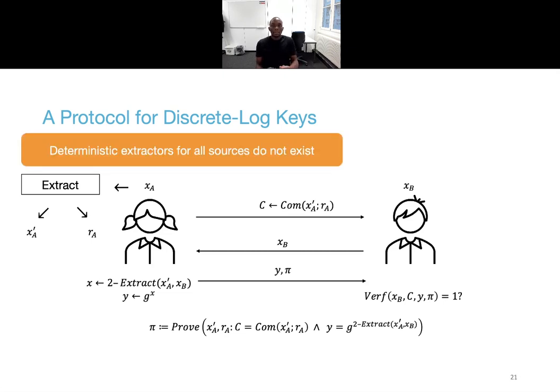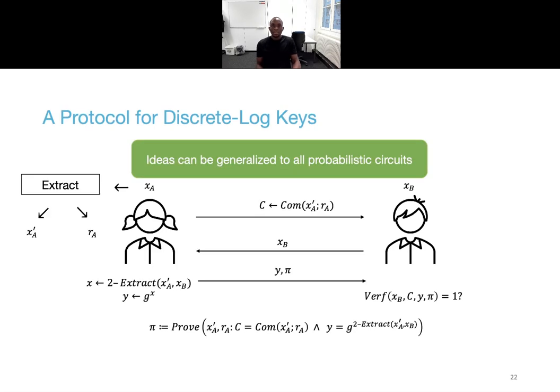A caveat is here that deterministic extractors for all sources do not exist. So one must either use a random oracle or universal computational extractors in a plain model. On the positive side, this idea for discrete log keys can be generalized to all key generation algorithms that can be modeled as probabilistic circuits with no other restriction.